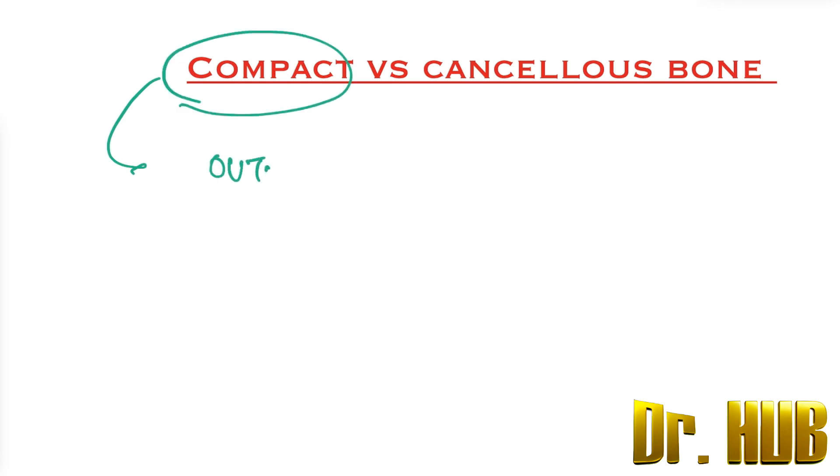The compact bone location is in the outer cortex. And what about the lamella? The lamella is arranged from the Haversian canal, so it forms a Haversian system.